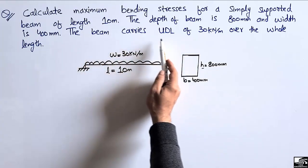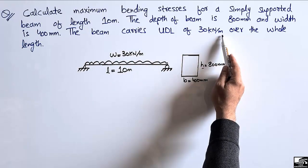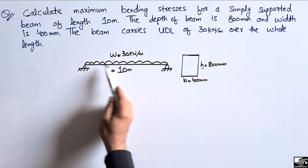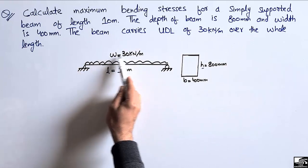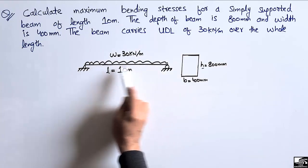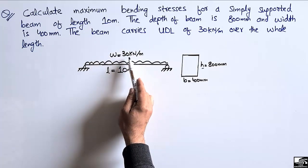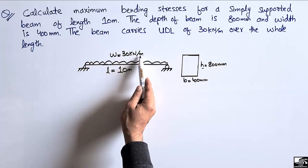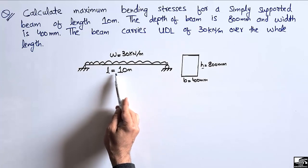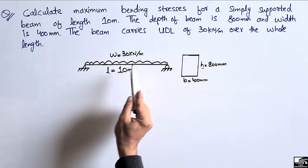The beam carries a uniformly distributed load of 30 kN per meter over the whole length of the beam. This load is distributed over the whole length of the simply supported beam.